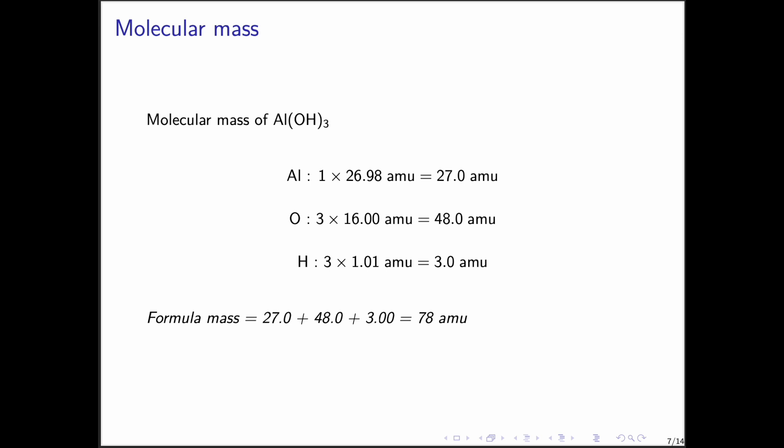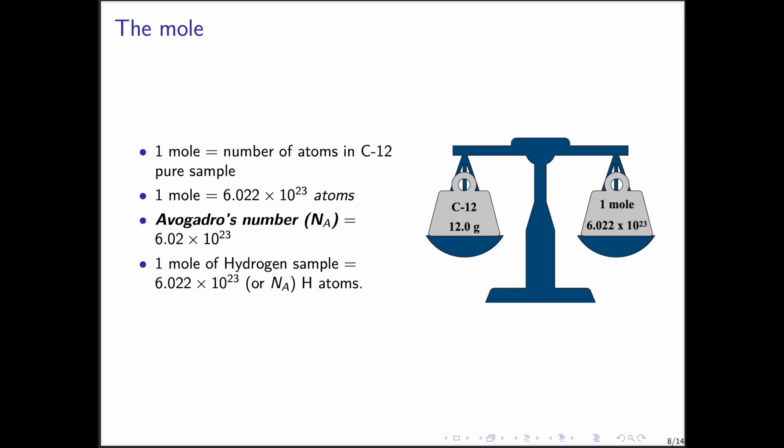Now comes a cornerstone concept: the mole. A mole is the amount of substance that contains the same number of atoms as there are in exactly 12 grams of carbon-12. That number is Avogadro's number, which equals 6.022 times 10 to the 23rd objects. So, one mole of hydrogen atoms contains 6.022 times 10 to the 23rd hydrogen atoms, and the same goes for any other element or molecule.